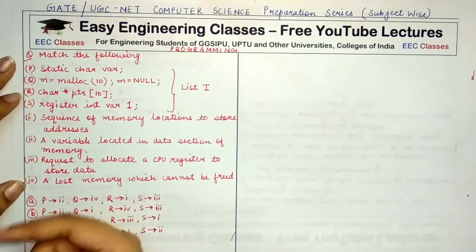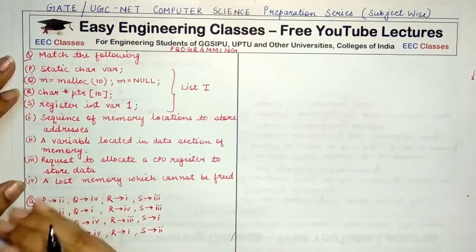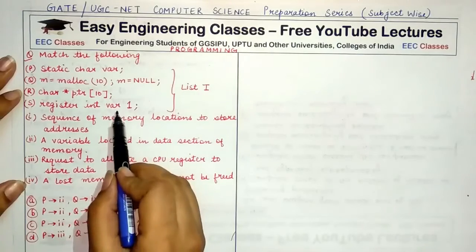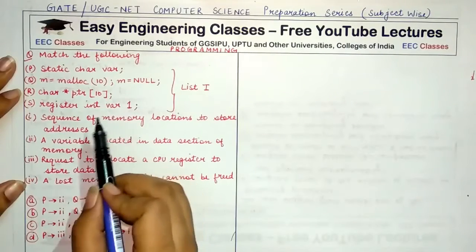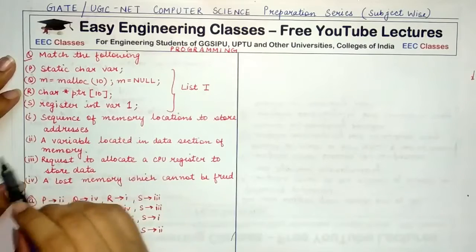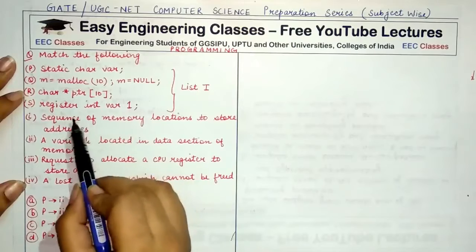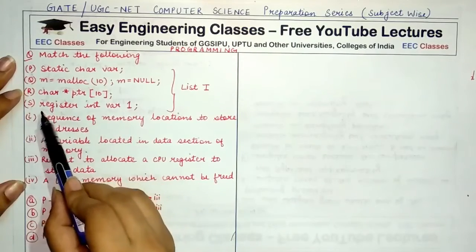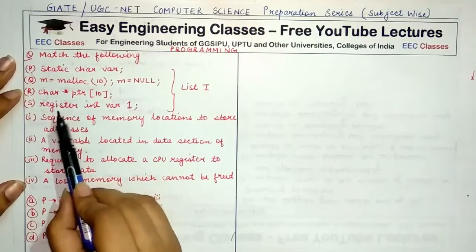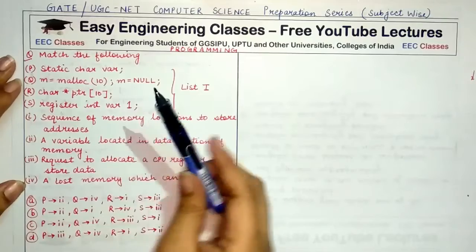Option S, register int var1: whenever you use the register keyword, it is a request — not a command — to the compiler to allocate a predefined CPU register to the given variable. If the register is available the request is accepted, but if not, it is denied. That is why we say the register keyword is not a command to the compiler.